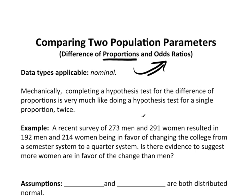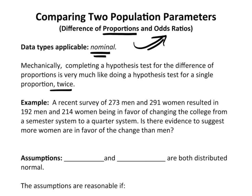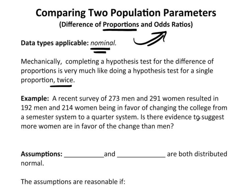Now the data types applicable is nominal. This only makes sense for nominal data. Completing the hypothesis test for the difference of proportions is an awful lot like doing a hypothesis test for a single proportion, only doing it twice. By twice, I'm really making reference to the assumptions. The process is almost identical to what we did. Just like in the means, when we compared two means using a t-test, they both had to be normal, or the CLT applied to both. It's the exact same idea here, only obviously with proportions, the idea of the data being normal makes no sense. But we do need proportions to be normal.